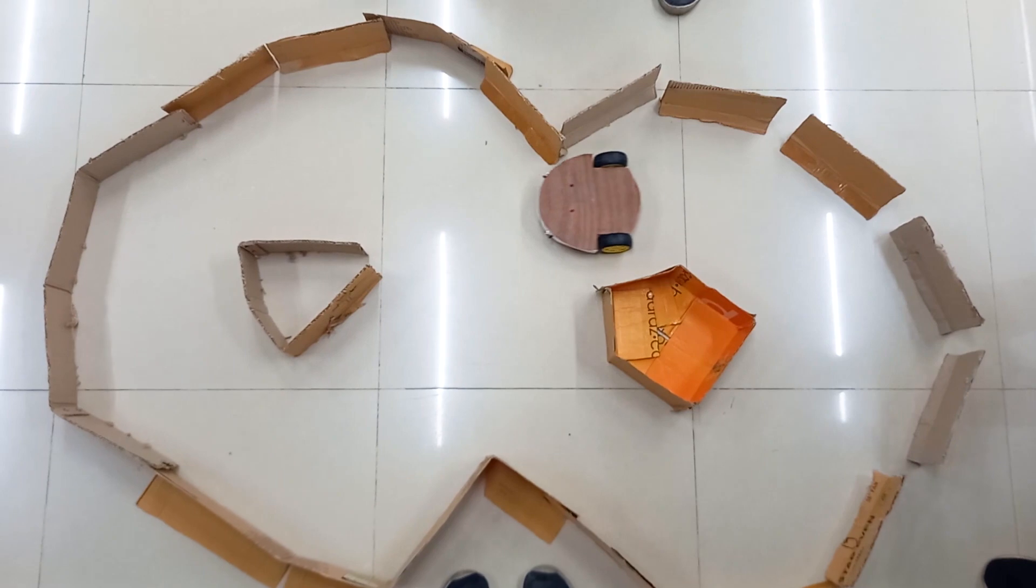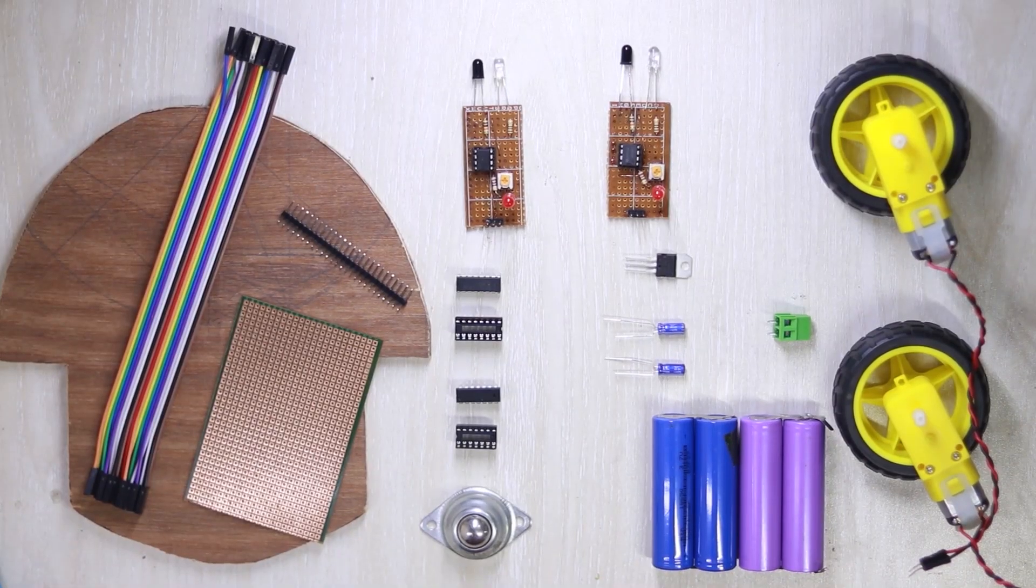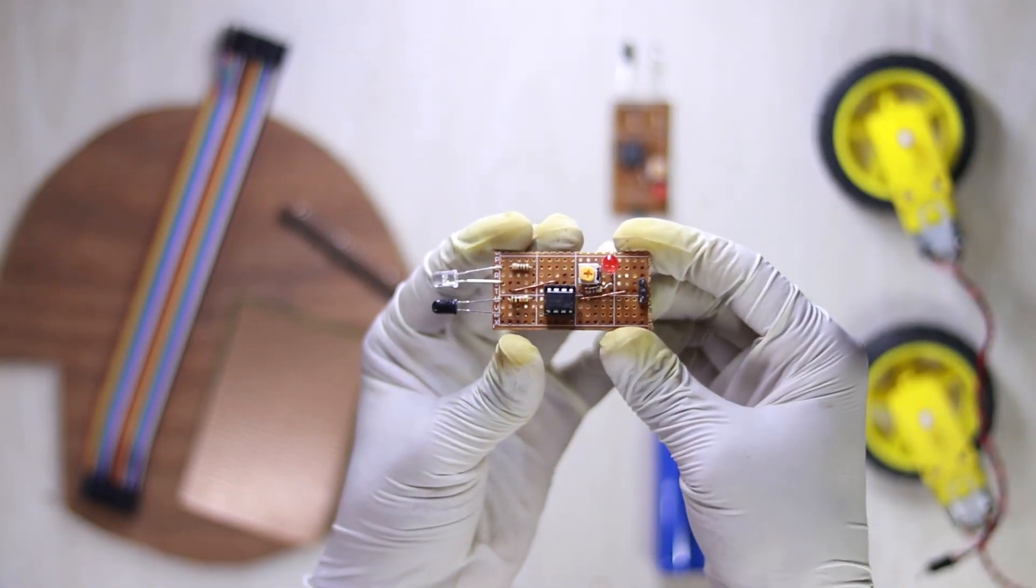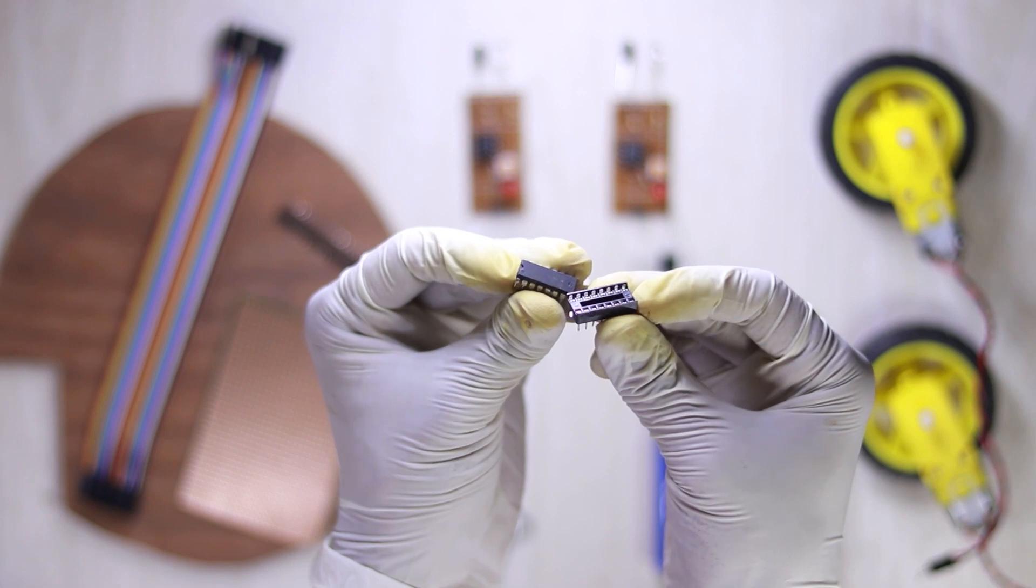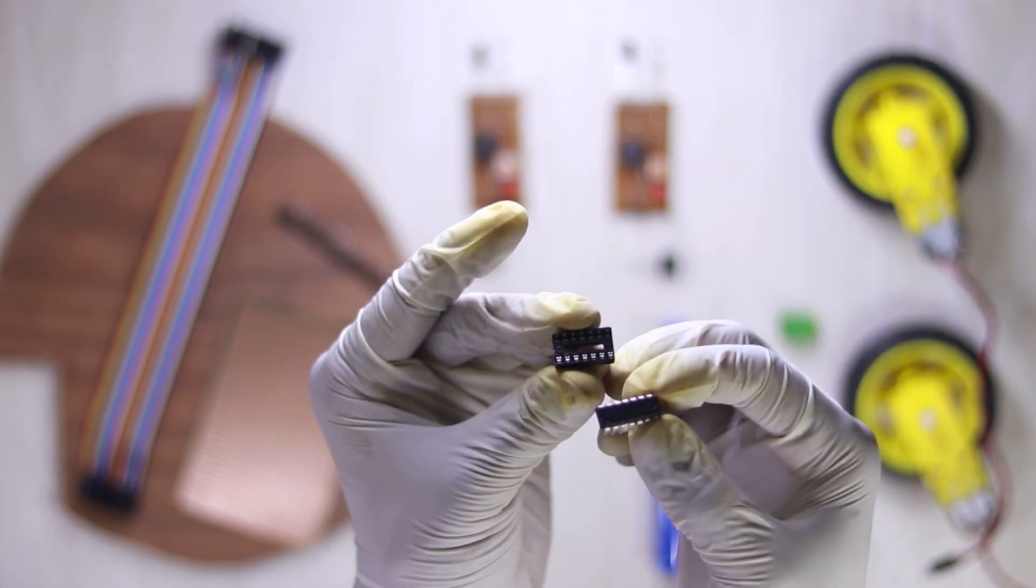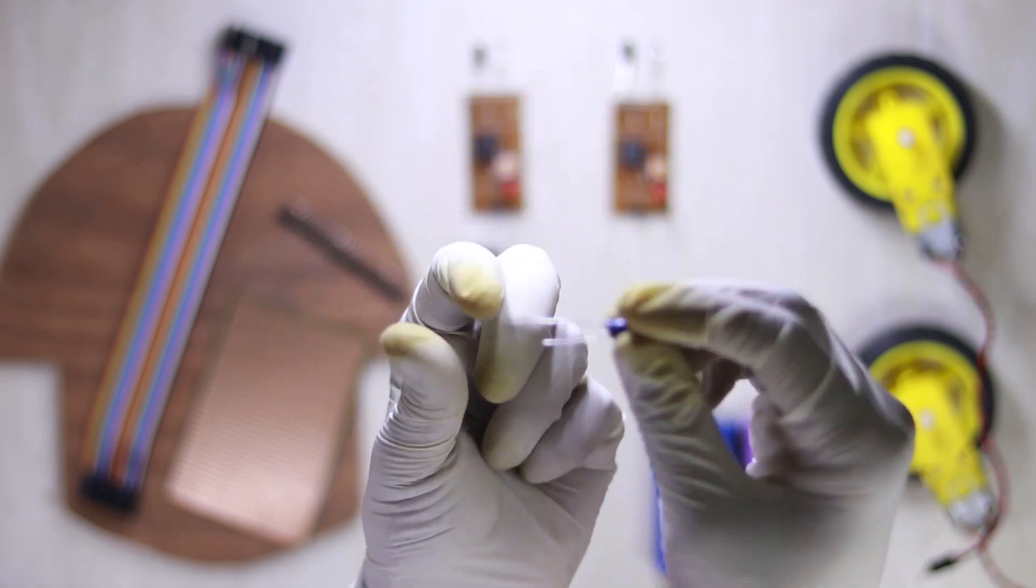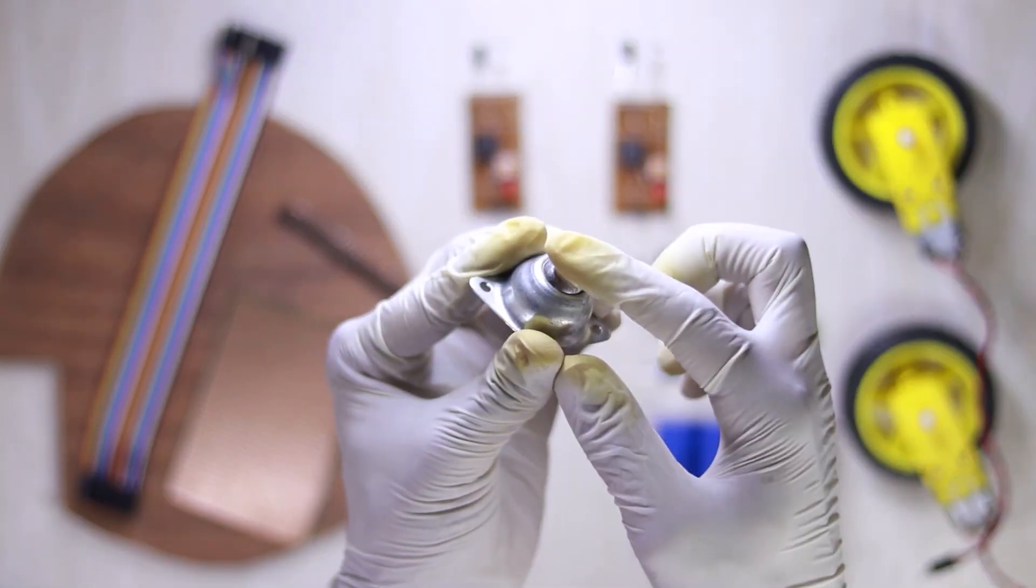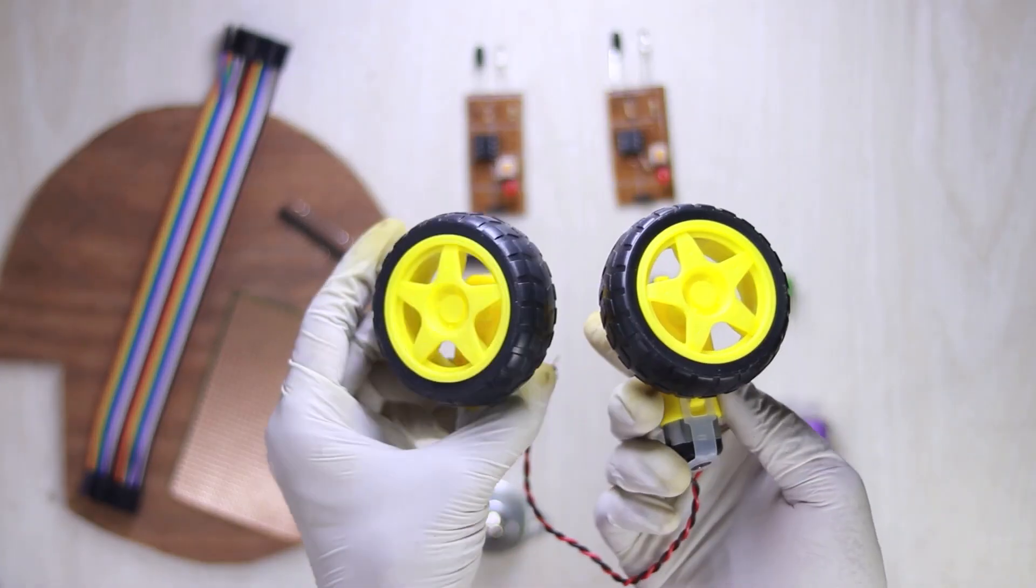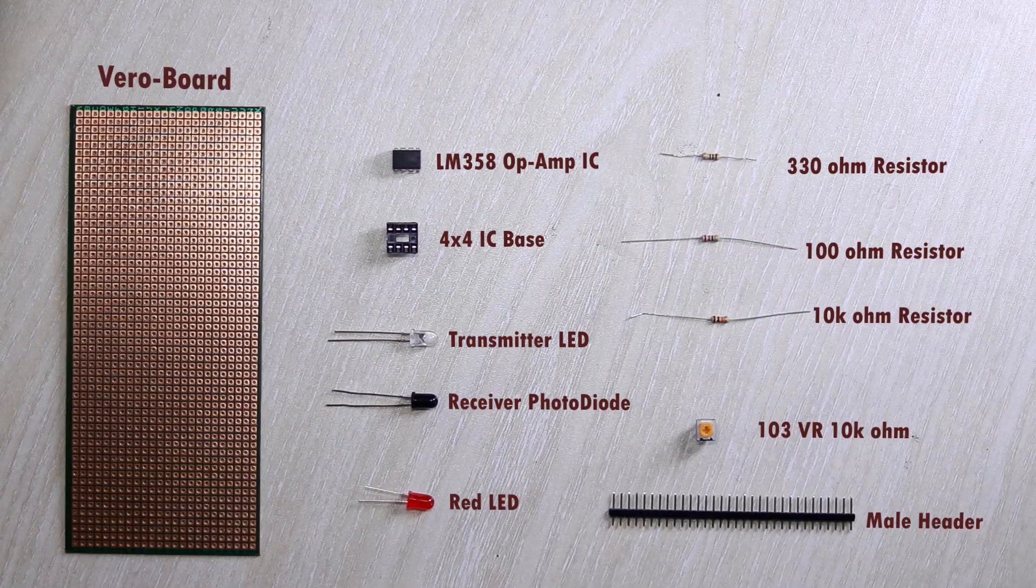To make this project, you need some components: two IR sensor modules, a motor driver IC and its base, a hex inverter and its base, a 5-volt voltage regulator and 210 microfarad capacitors, a wire connector, a ball caster wheel, two DC motors and wheels. For making the IR sensor module, you need more components.